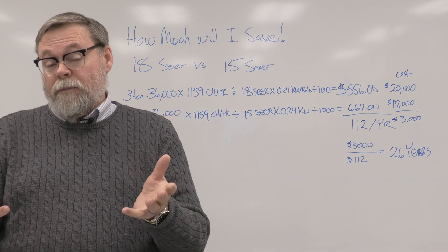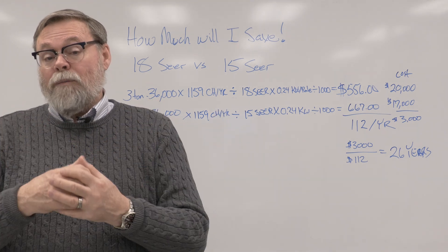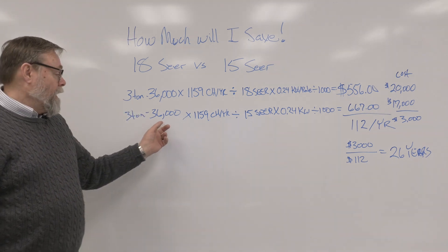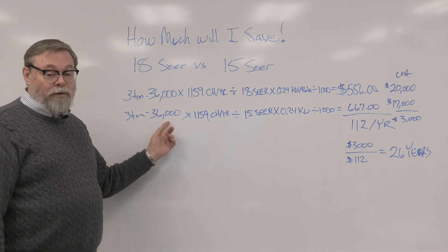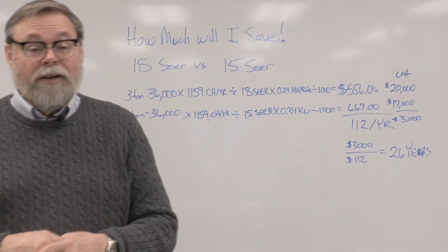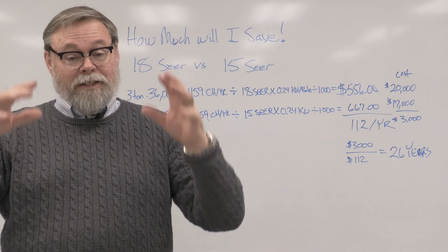We might be able to put a two-and-a-half-ton system in and that will save a lot more money. And you can do the math yourself if you want to try what it would be. Take this to 30,000 BTUs and do the math and you'll find it will come very close to what it costs to do that 18-SEER system just by sizing down the windows.